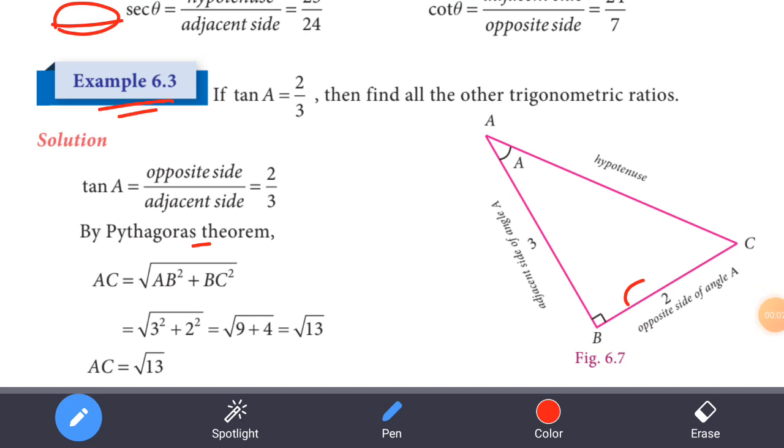For example, if tan A is equal to 2 by 3, then find all the other trigonometric ratios.